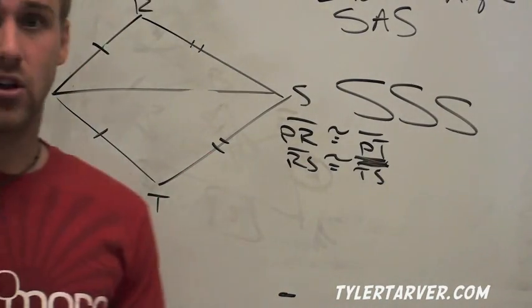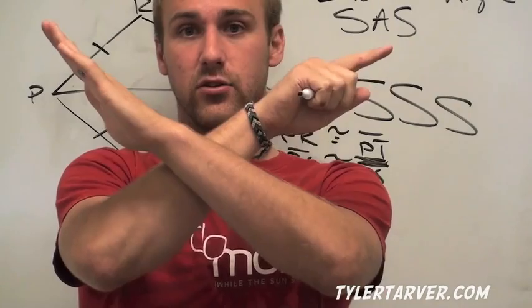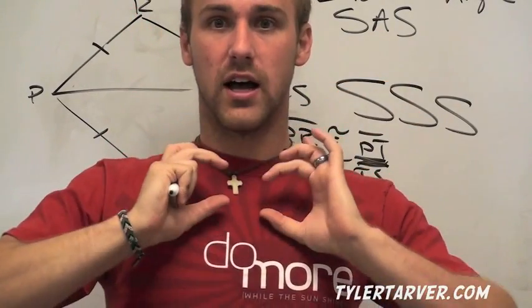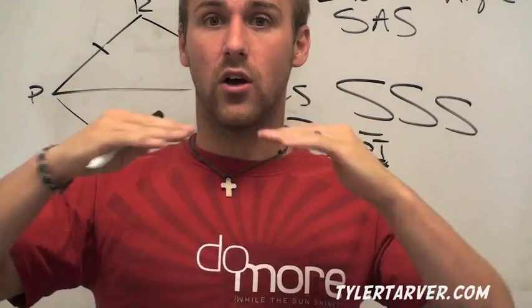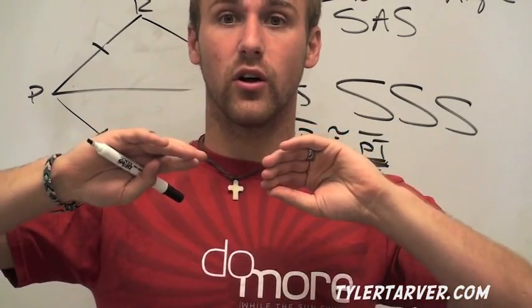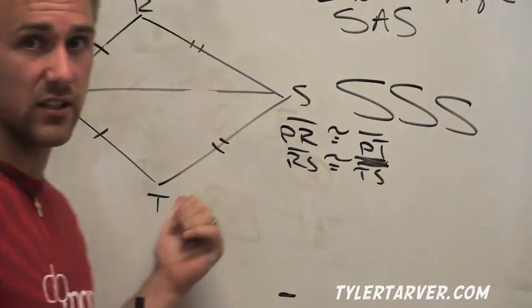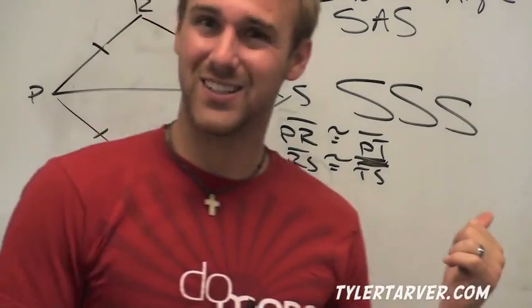One of them is called the vertical angles theorem. That's whenever there's a line right here and a line right here, and these two triangles look like a necktie or something. We know that the angles on this side and this side are congruent because they're vertical angles. We're not using that here because it doesn't look like a necktie, does it? No, it doesn't.